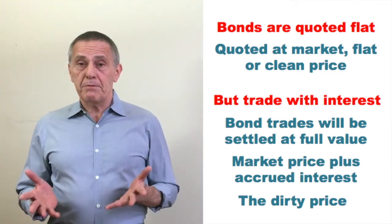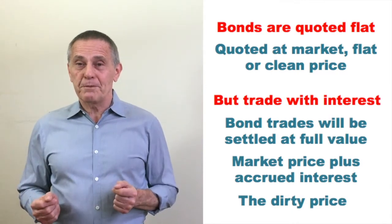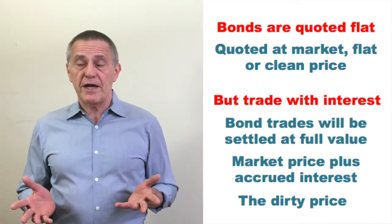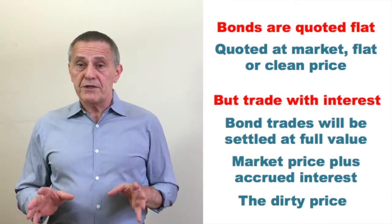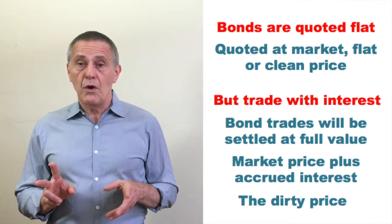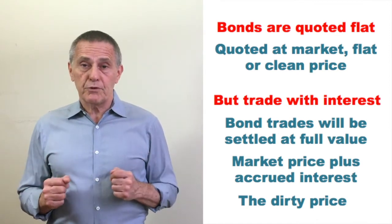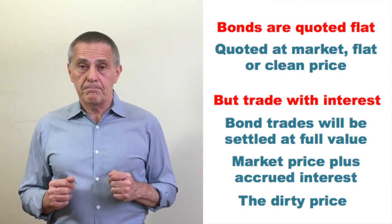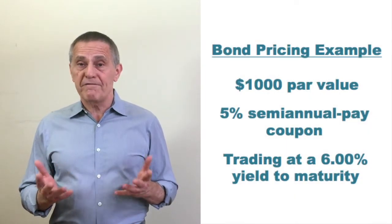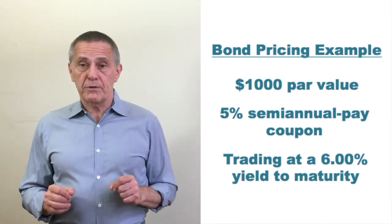Now, that word salad might be relatively confusing, especially if one is trying to picture all that in their mind's eye. It's likely going to be easier to follow if we work through a specific example. So let's price a particular semi-annual pay coupon bond twice. Once for settlement on a coupon payment date, the other time for settlement between coupon payment dates. The bond we'll use will be a $1,000 par value, 5% coupon semi-annual pay bond trading at a 6% yield to maturity.